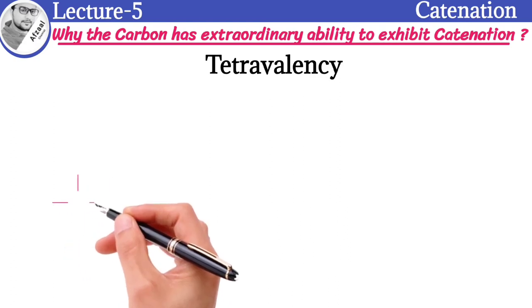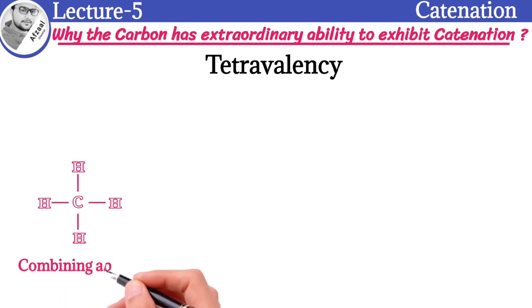Tetra means four, and valency is the combining ability of an element to make bonds. Let's see how carbon makes four bonds.